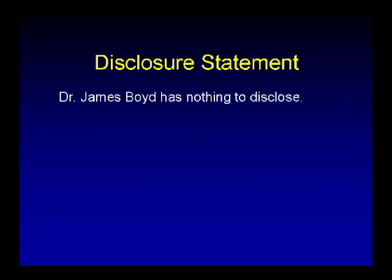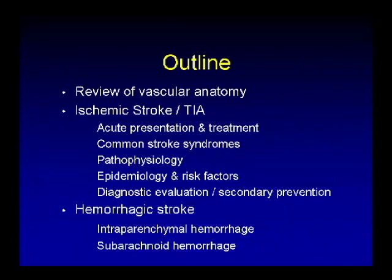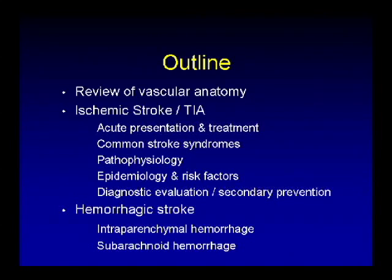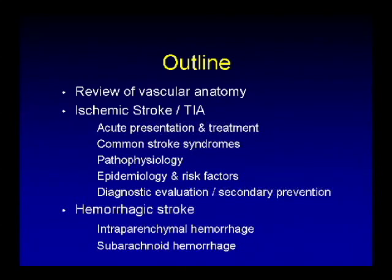I have nothing to disclose. What we're going to review is a brief overview of vascular anatomy of the cerebrovasculature, ischemic stroke and TIA including acute presentation and treatment, common stroke syndromes, pathophysiology, epidemiology and risk factors, diagnosis, and secondary prevention. We'll also speak about hemorrhagic stroke, focusing on the two most common types: intraparenchymal and subarachnoid.